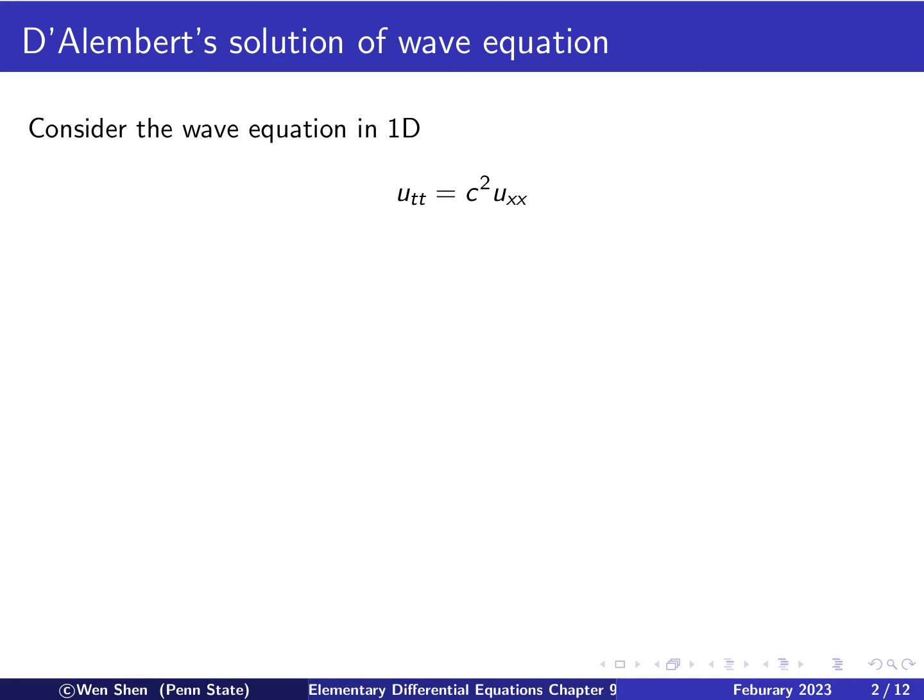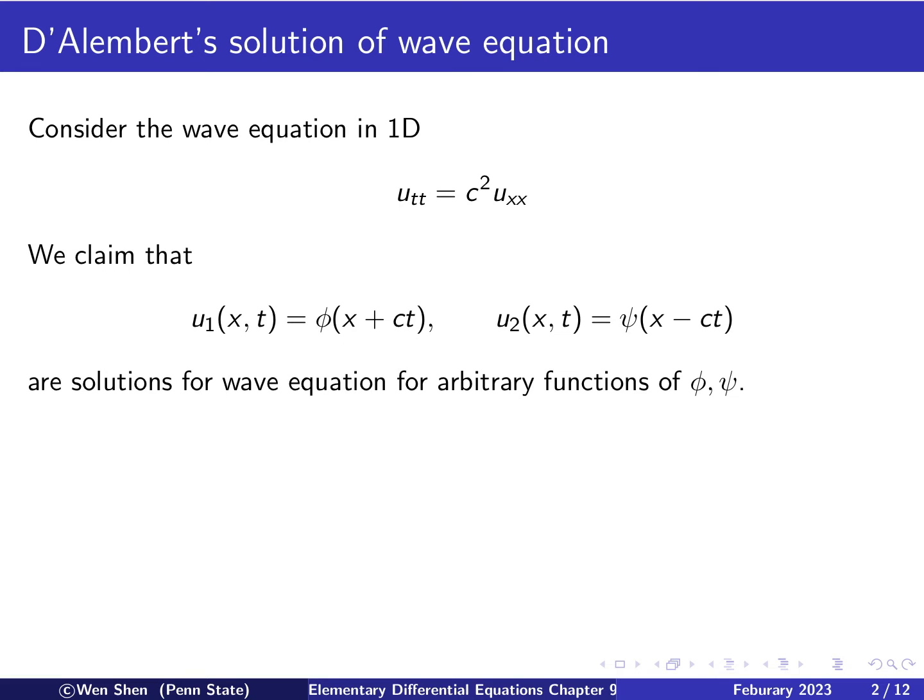So let's consider our wave equation in one space dimension: utt equals c squared uxx. We now claim that the two functions U1 and U2, as follows - U1 function of x and t equal to some function φ depending only on one variable, that is x plus ct, and the second function U2, let's call it ψ, depends only on the variable x minus ct. We claim that the two functions like this, for any arbitrary functions φ and ψ, would be solutions for the wave equation.